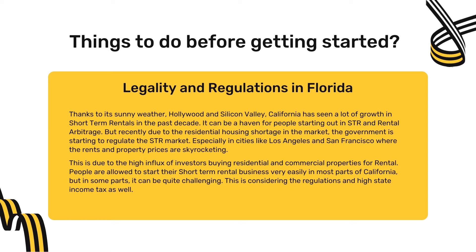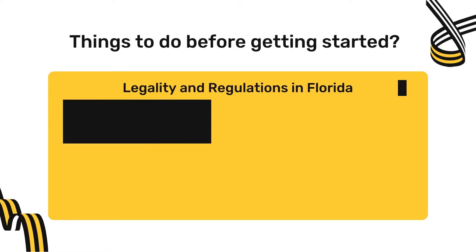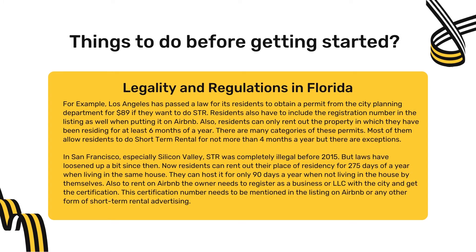People are allowed to start their short-term rental business easily in most parts of California, but in some parts it can be quite challenging, considering regulations and high state income tax. For example, Los Angeles has passed a law requiring residents to obtain a permit from the city planning department for $89 if they want to do short-term rental. Residents also have to include the registration number in their Airbnb listing, and can only rent out property where they have resided for at least six months of the year.